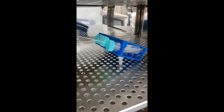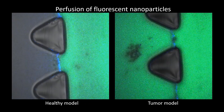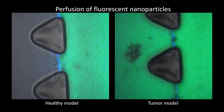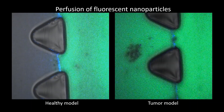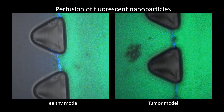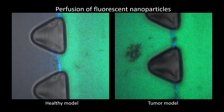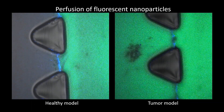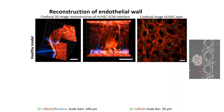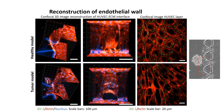Here they are. And now the exciting part — a perfusion test with 20 nanometer nanoparticles. Healthy endothelial cells create a barrier, just like a healthy blood vessel. But the presence of cancer cells affects them — they become injured and leaky.